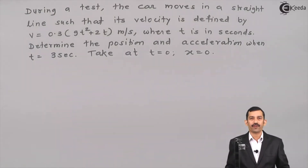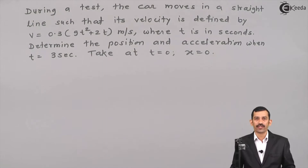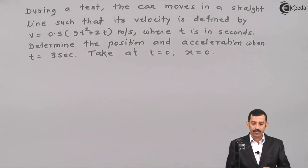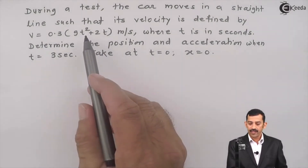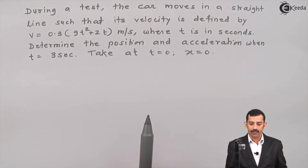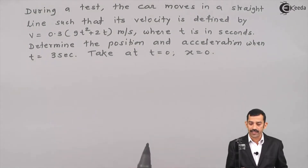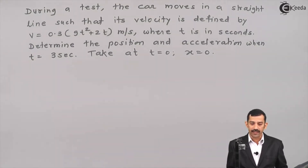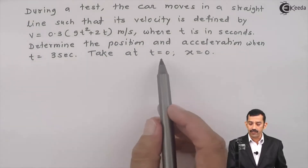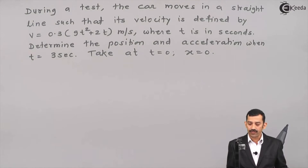Hi friends, we will solve a problem on variable acceleration. During a test, the car moves in a straight line such that its velocity is defined by v = 0.3(9t² + 2t) meters per second, where t is in seconds. Determine the position and acceleration when t = 3 seconds. A boundary condition is given: at t = 0, x = 0.